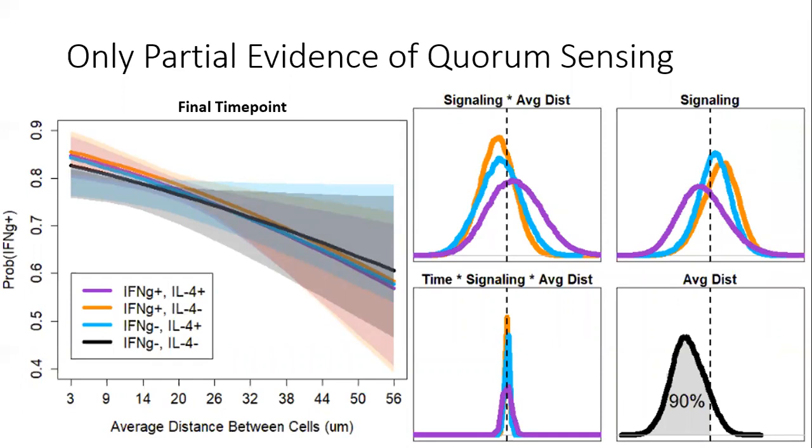The results were quite complex, but also compelling. Here I'm presenting the results in which the average distance between cells in a microwell is used as the proxy for cell density.